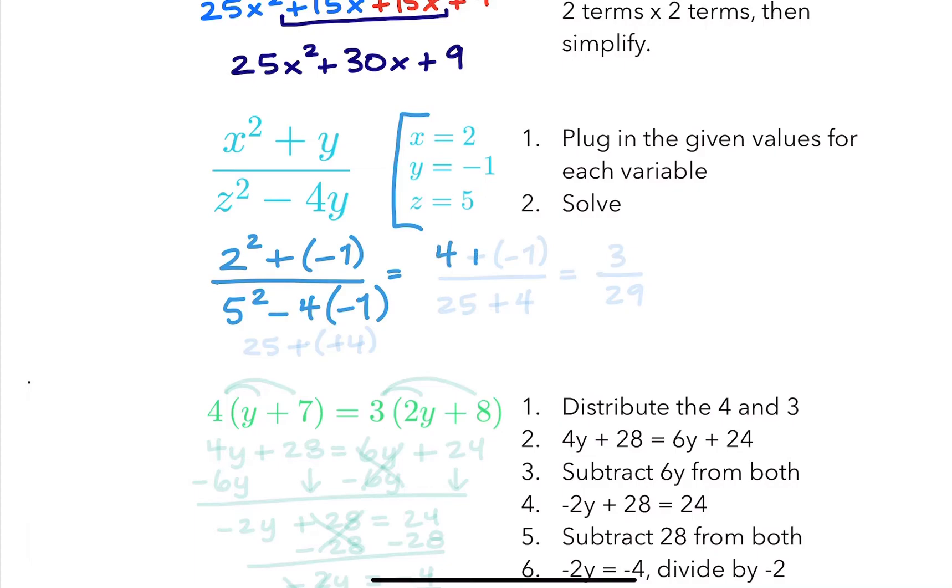So that'll be 4 plus negative 1 over 25 minus negative 4. So that's going to be plus 4, because this will be 25 minus negative 4, so plus positive. Okay, so we'll end up with 3 over 29.